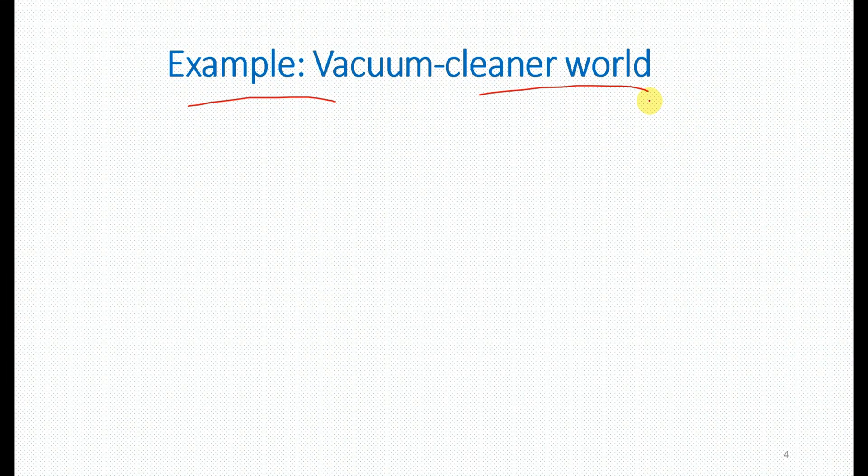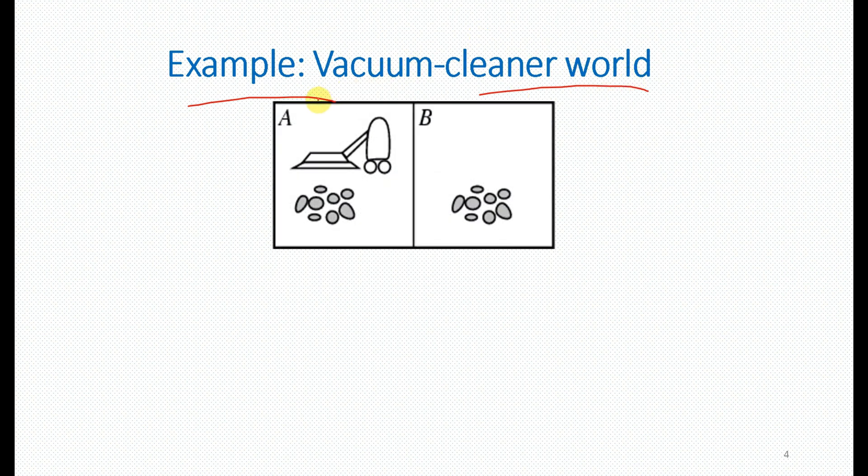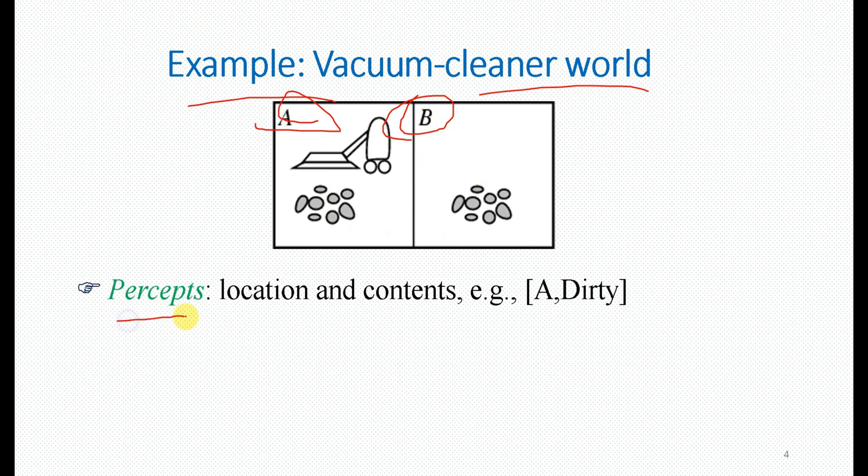A simple example: vacuum cleaner. Let's say there are two rooms - room A and room B. The vacuum cleaner moves between these rooms. If there is a dust particle in this room, the vacuum cleaner will clean it. The percepts are location and content. Location means where is it - left or right, room A or room B.